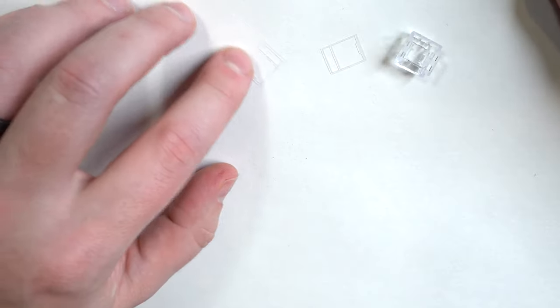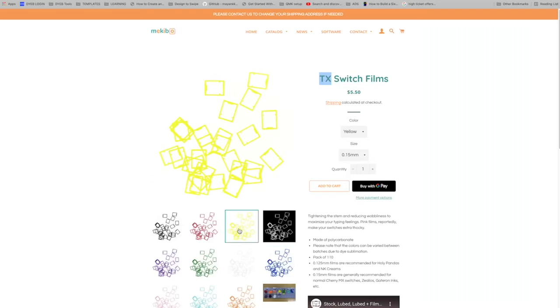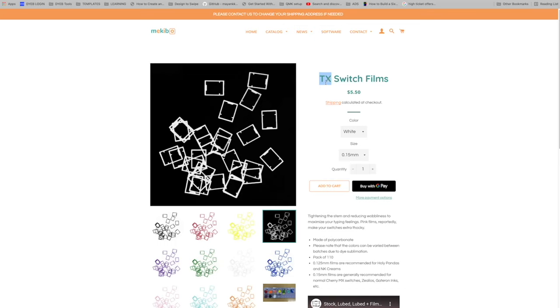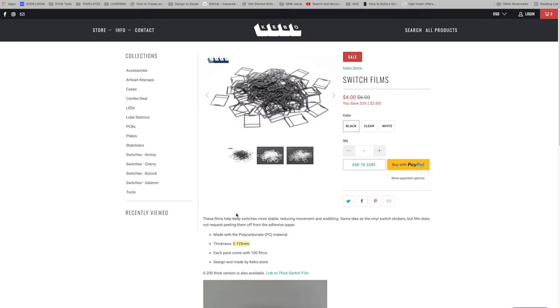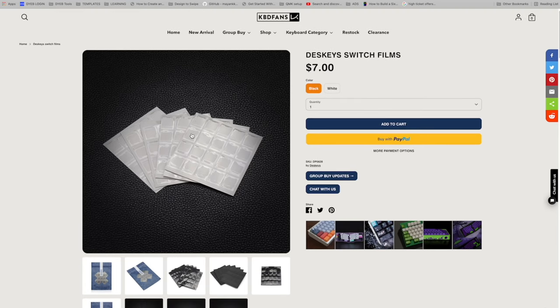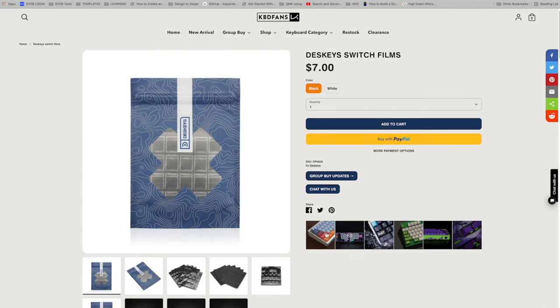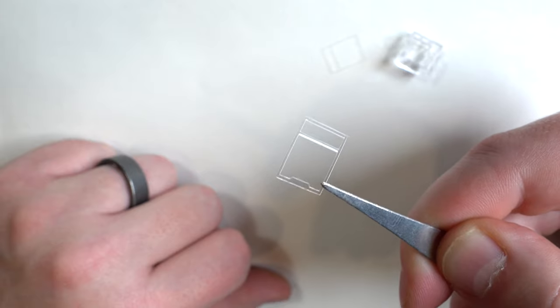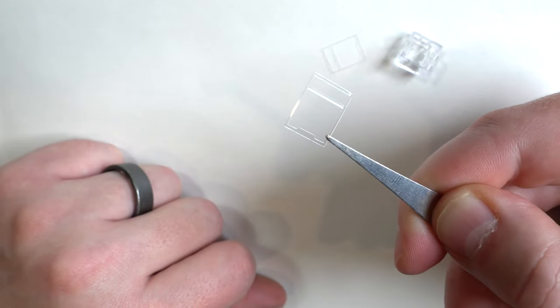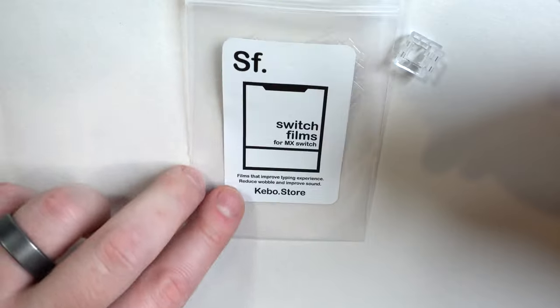Also worth noting, by the way, that you can get these in different colors and stuff and different materials. I've only ever used the Kelowna store versions. I've ordered like three packs of them and they're super cheap. It's like less than $10, maybe like $6 plus shipping. And you can get them in white, black, clear and different materials. That's what I use right there.